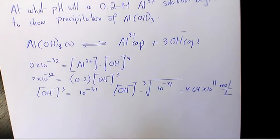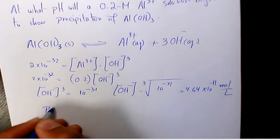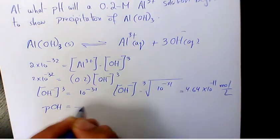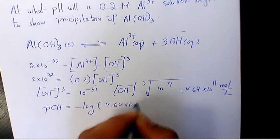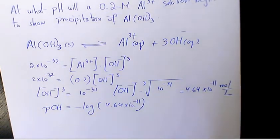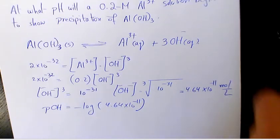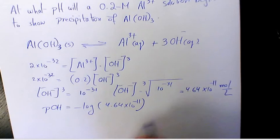of hydroxide ion. So from that we can find pOH. pOH is -log(4.64×10⁻¹¹), which is gonna be 10.33.